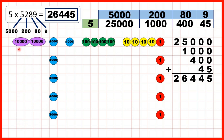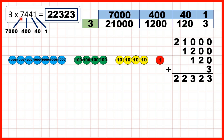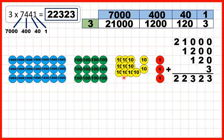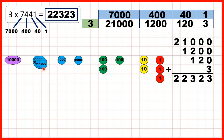You can see that we now have 2 ten-thousands, 6 thousands, 4 hundreds, 4 tens and 5 ones. Then we had 7,441 — so there's 7 thousands, 4 hundreds, 4 tens and 1 one. We were multiplying by 3, so we can show this 2, 3 times. And then when we do our regrouping, you can see that we end up with 2 ten-thousands, 2 thousands, 3 hundreds, 2 tens and 3 ones.